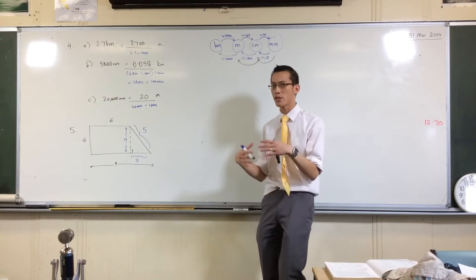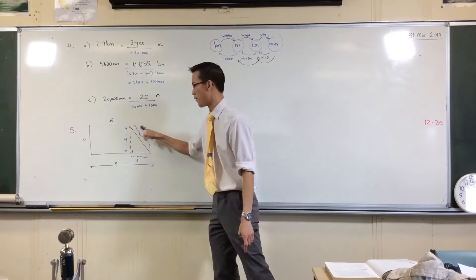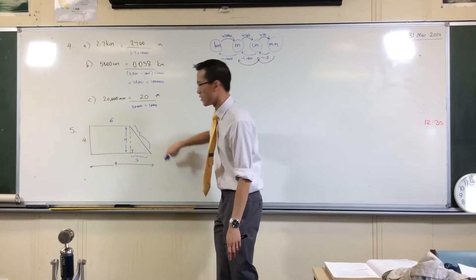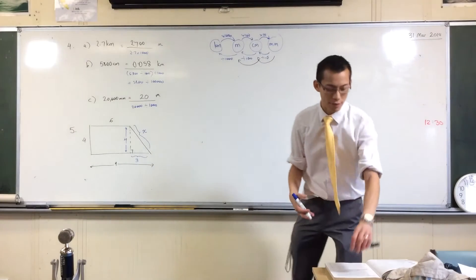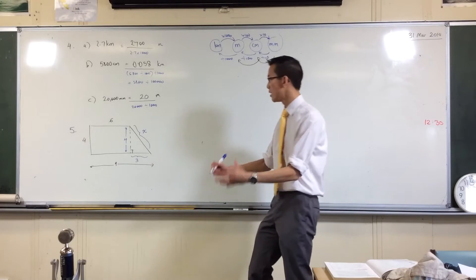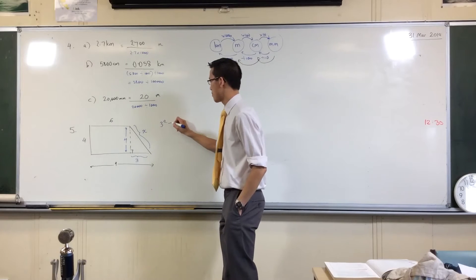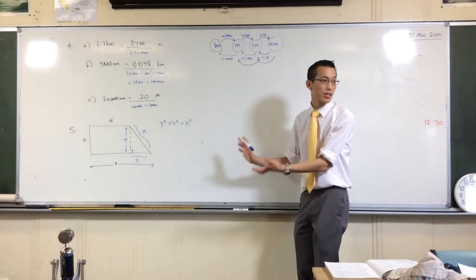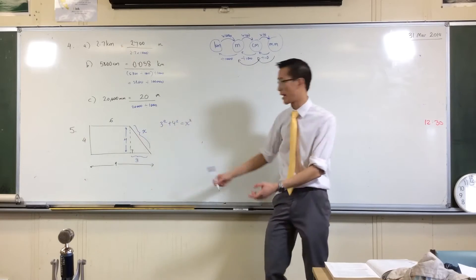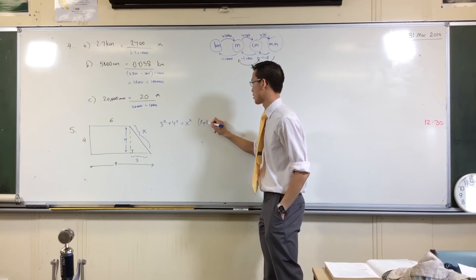Now supposing you couldn't remember that three, four, five gives you a right angle triangle. Suppose you gave this some name, like X. If you wanted to set it out, you'd say three squared plus four squared equals X squared. That's Pythagoras' theorem in this triangle.